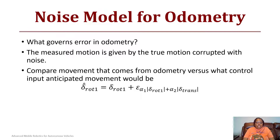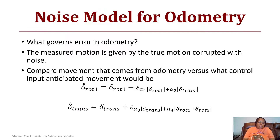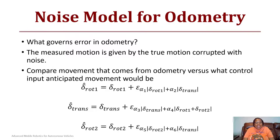Delta rotation one is equal to delta rotation one plus epsilon times the magnitude of delta rotation one plus alpha two times delta translation. We have something similar for delta hat of the translation, where it starts with the input value delta translation plus epsilon times alpha three times the magnitude of delta rotation one plus delta rotation two. Similarly, delta rotation two equals delta rotation two plus epsilon times alpha five times delta rotation two plus alpha six times delta translation.